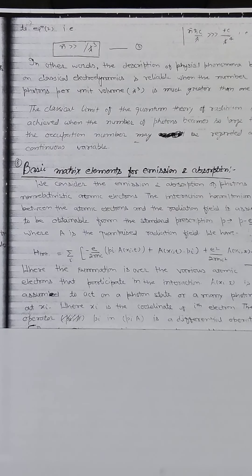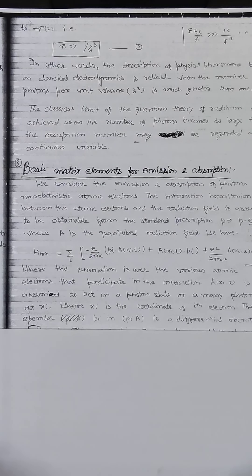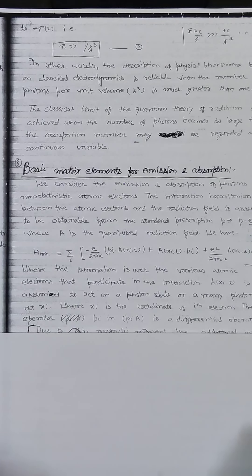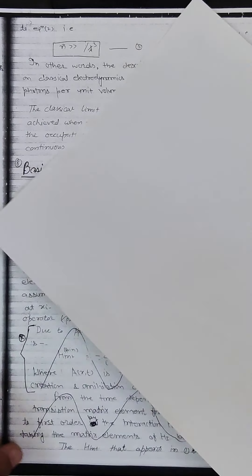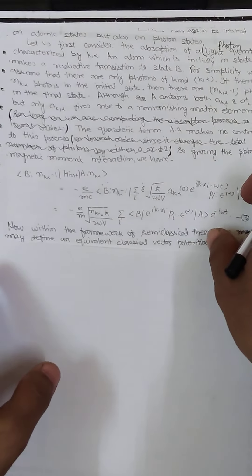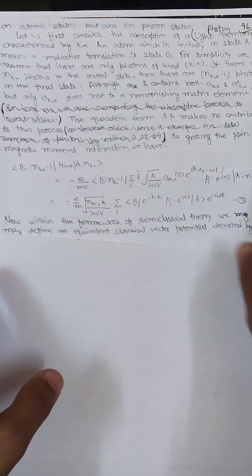The quantized radiation field A is assumed to act on a photon state or a many-photon state at x_i, where x_i is the coordinate of the i-th electron. The operator p_i is a differential operator on the atomic state but also on the photon state.